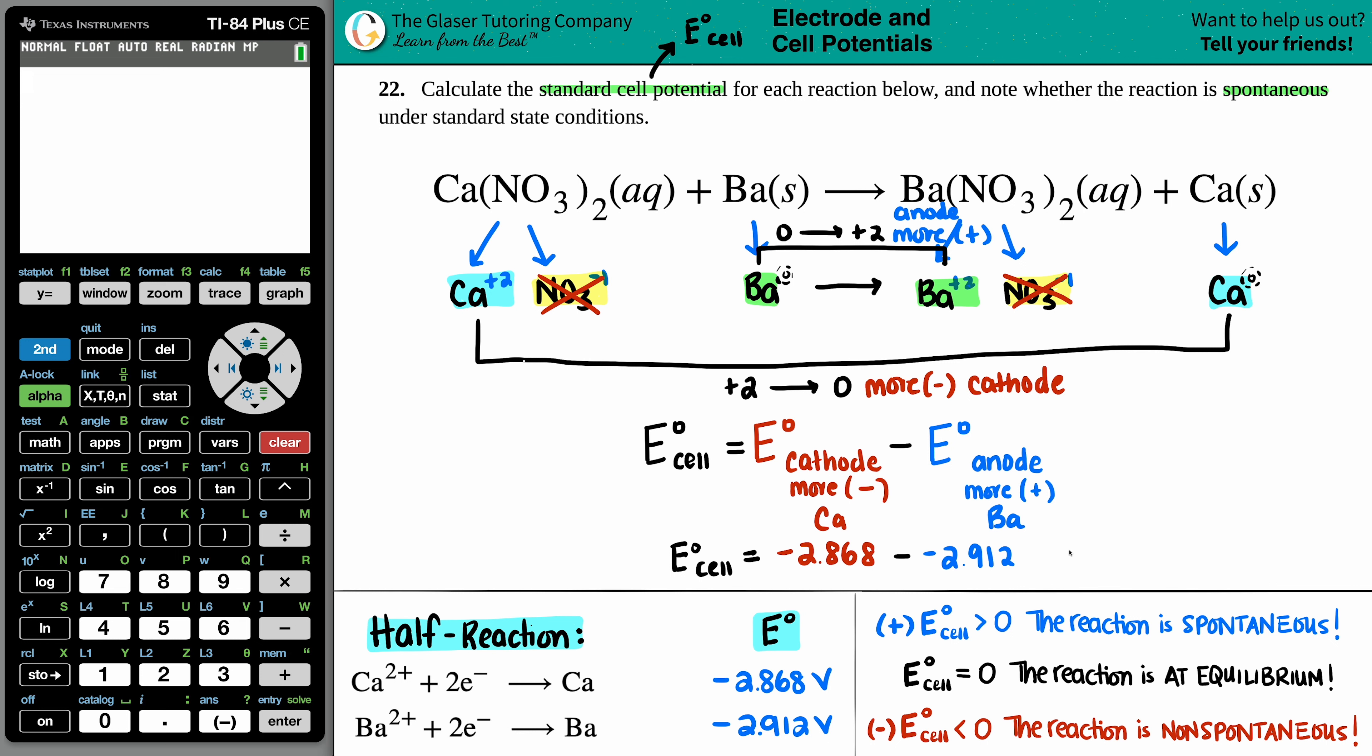Let's plug that in and let's get out our E cell. So negative 2.868 minus a negative 2.912. Numbers look good. Press enter. I get 0.044. And that's the units of volts. All right. So we got the standard cell potential, 0.044 volts.